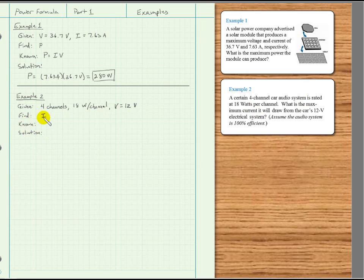What is known that relates the given information to the unknown that we're trying to solve for? We have a voltage and a current, and watts is a power. So we know that power equals I times V, but we're trying to solve for I, so we will rearrange that algebraically and write I equals P over V.